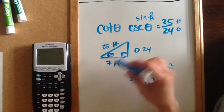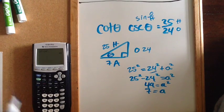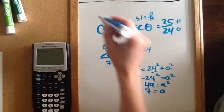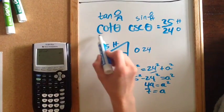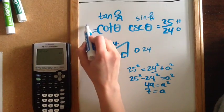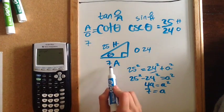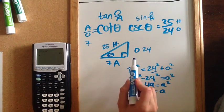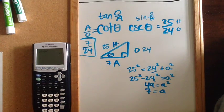You could have also known this because it's a Pythagorean triple, so if you're familiar with your Pythagorean triples you could have easily gotten 7. Now that I know all three sides, I want to find the cotangent. The tangent is opposite over adjacent, which means cotangent is adjacent over opposite. So I do the adjacent, which is 7, over the opposite, which is 24 — giving me 7/24.